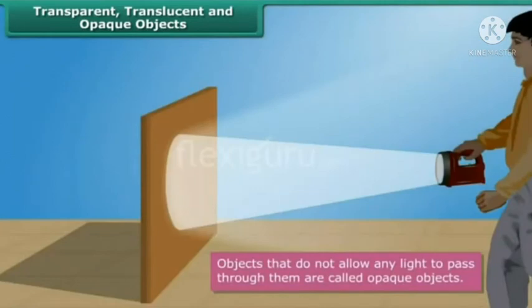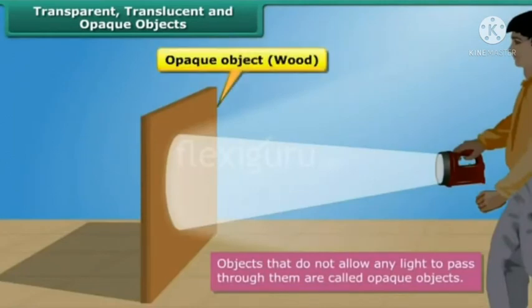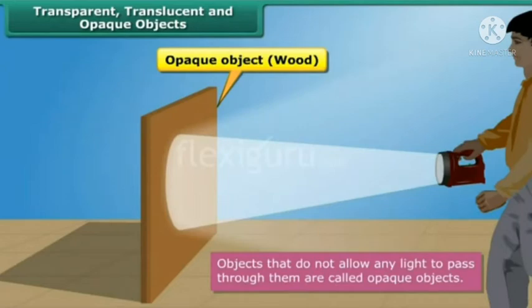Objects that do not allow any light to pass through them are called opaque objects. As a result, we cannot see through them. When light falls on an opaque object, its shadow is formed on the other side of it. Wood, sheets of metal, dark colored plastics, rocks, etc. are examples of opaque objects.